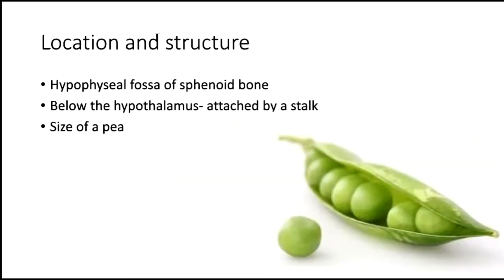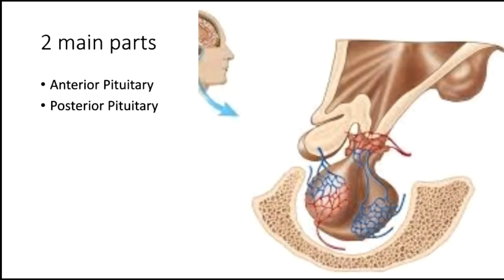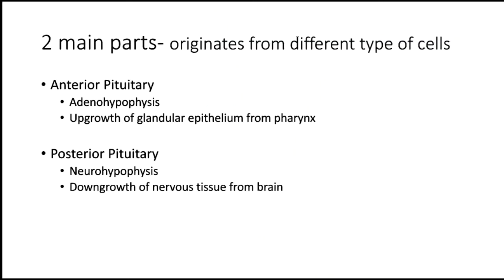It is just the size of a pea and weighs around 500 mg. There are two main parts or lobes of the pituitary gland: the anterior and the posterior pituitary. They differ greatly in structure and function.